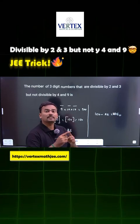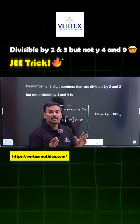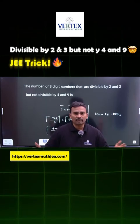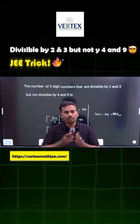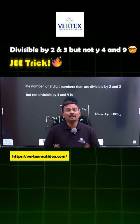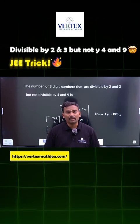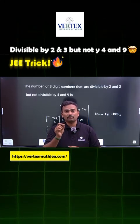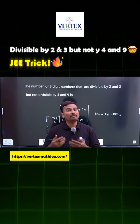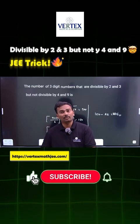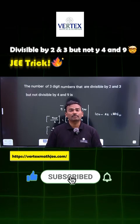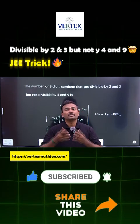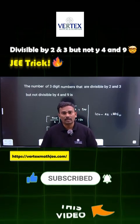I hope everyone understands. As a general shortcut: if you have a set of numbers from 1 to 2023 and want to find how many are divisible by 3, take the greatest integer function of 2023 divided by 3. This shortcut technique works to find the count of numbers divisible by whatever number you choose.